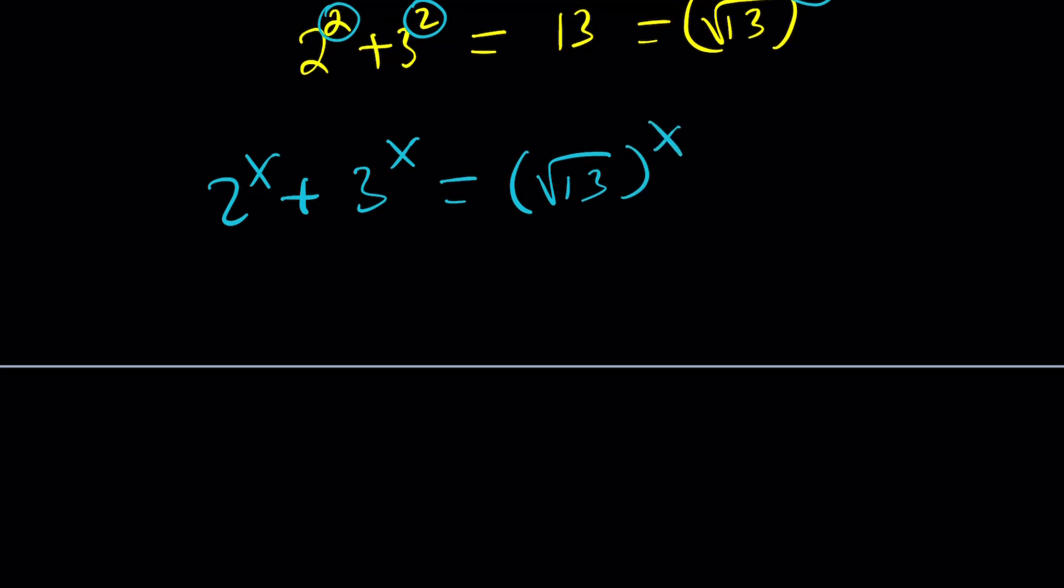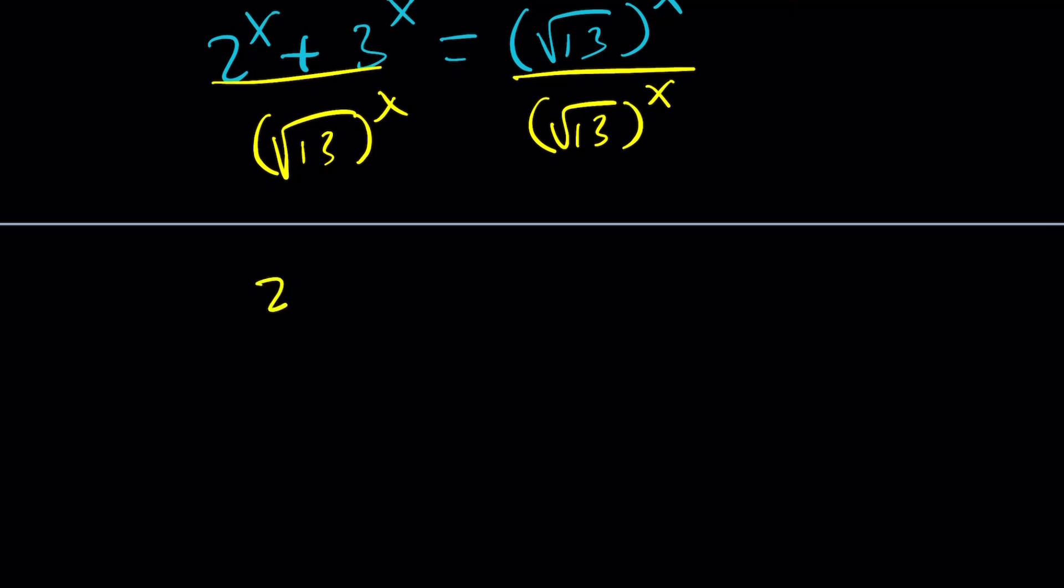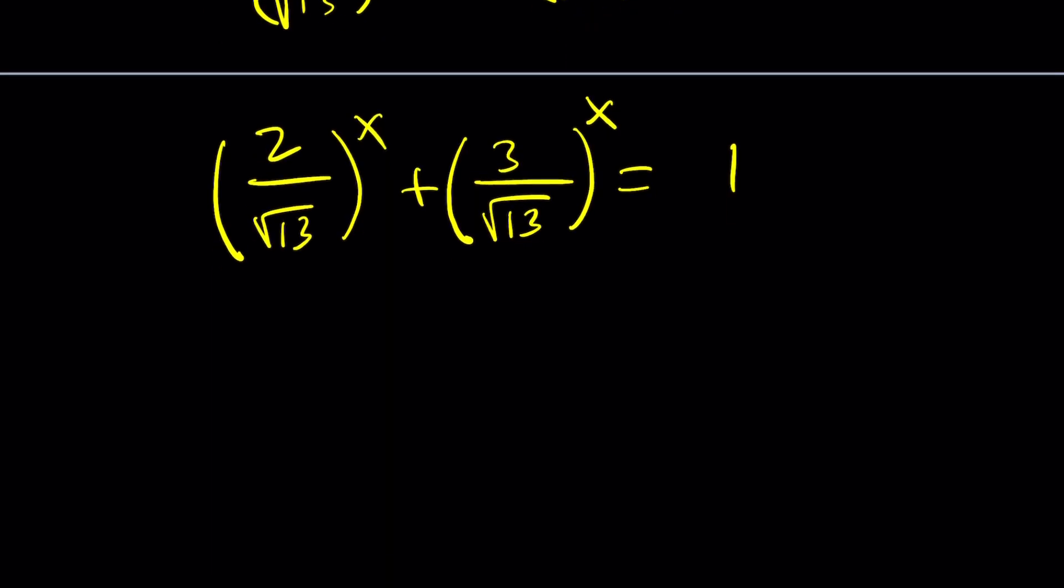Since square root of 13 is bigger than 2 and 3, let's divide both sides by square root of 13 to the power x. We're going to get 1 on the right-hand side, and on the left, we can use a common exponent. When I plug in x equals 2, I'm getting 4 over 13 and 9 over 13, and their sum is 1. This looks better than the original.